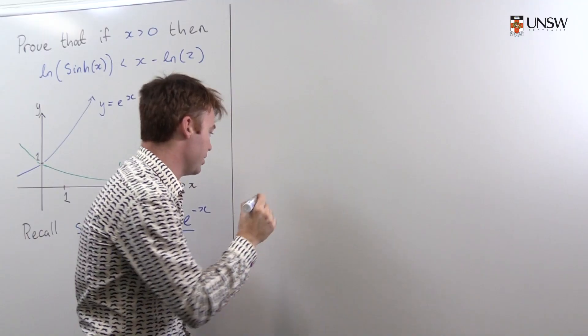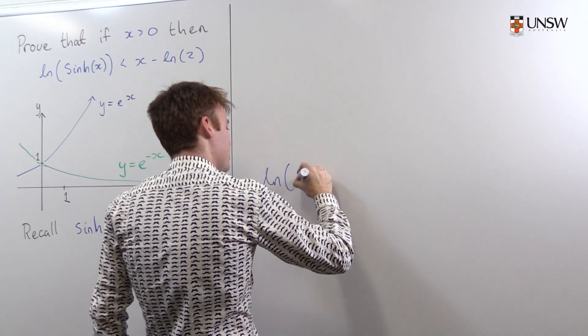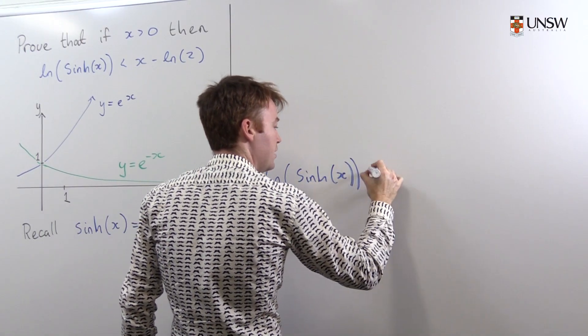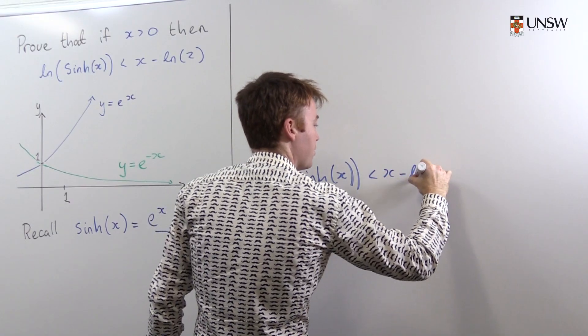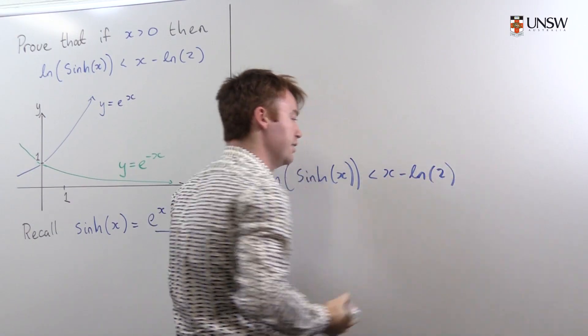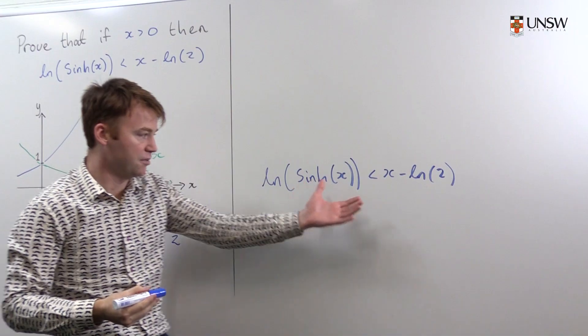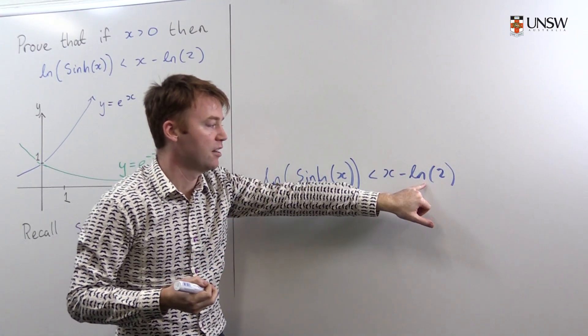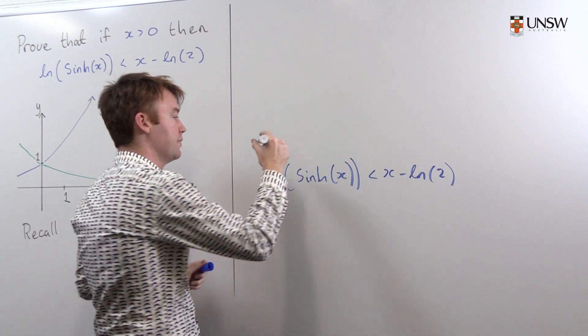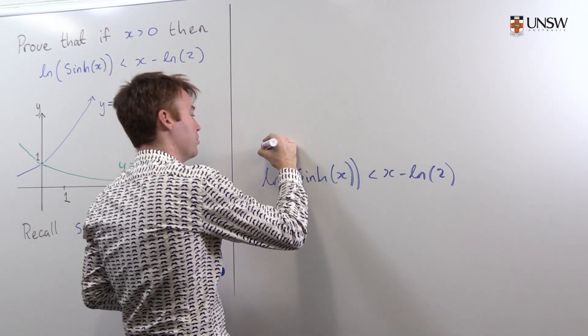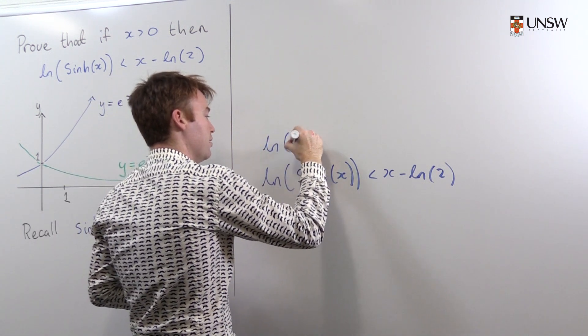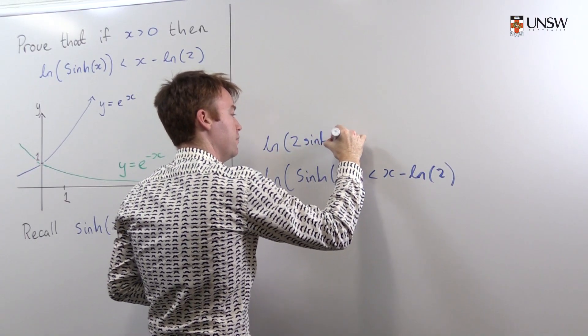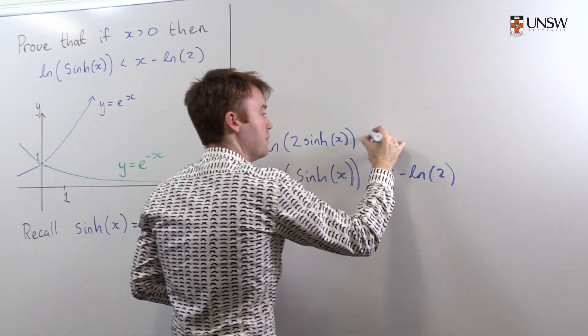So I begin by writing the natural log of hyperbolic sine is less than x minus natural log of 2. This is a nice thing to work with. There's lots of simplifications you can make from this statement. The first of which is I'll bring the natural log over here and push them together with log laws to say that the natural log of twice hyperbolic sine is less than x.